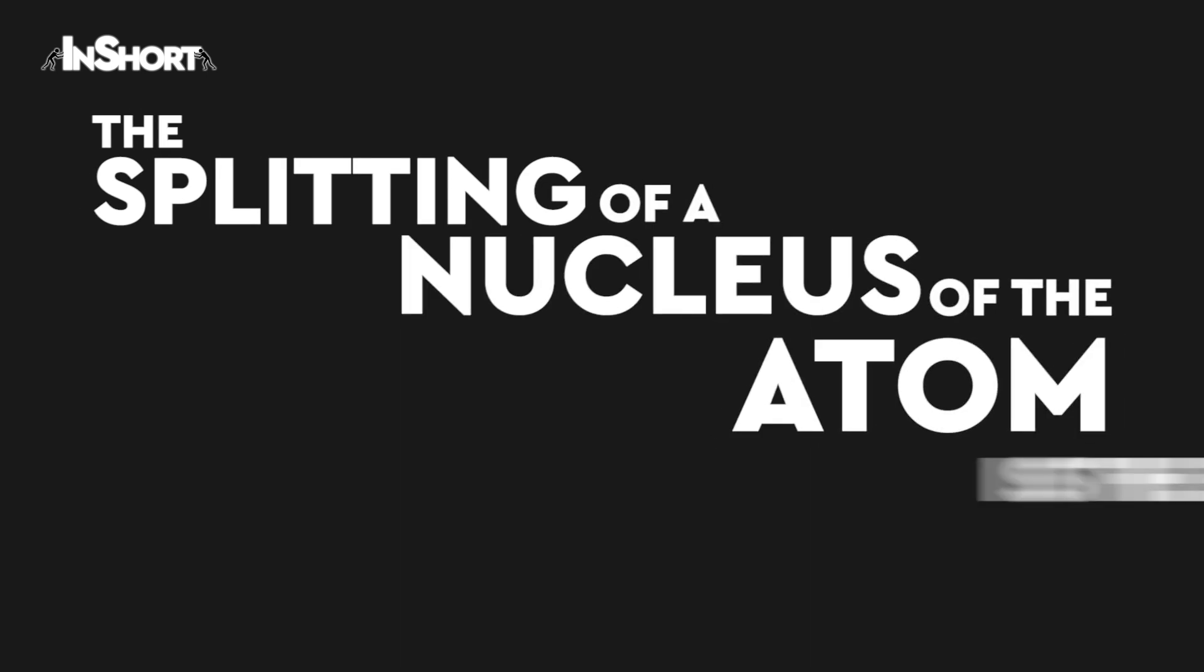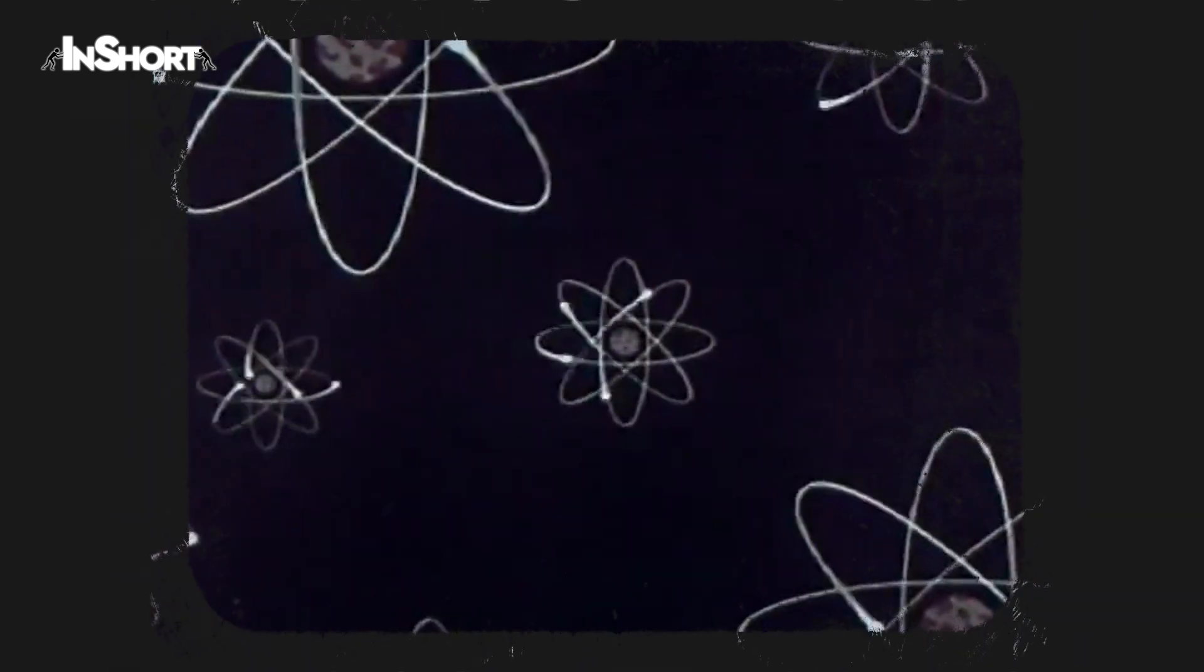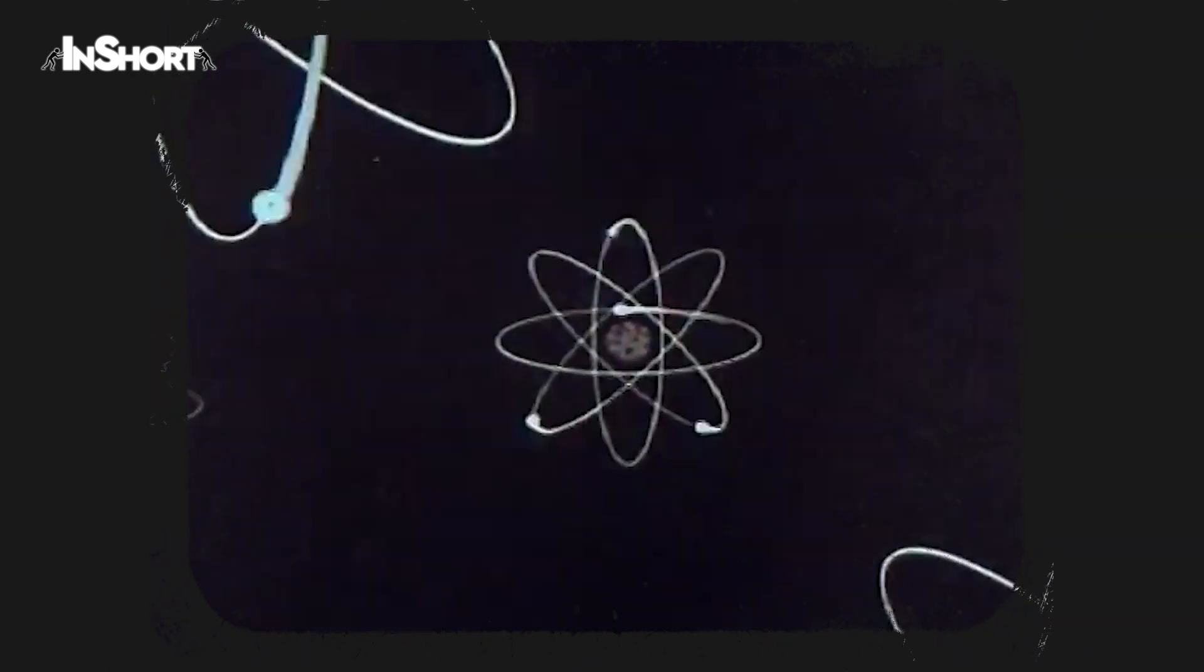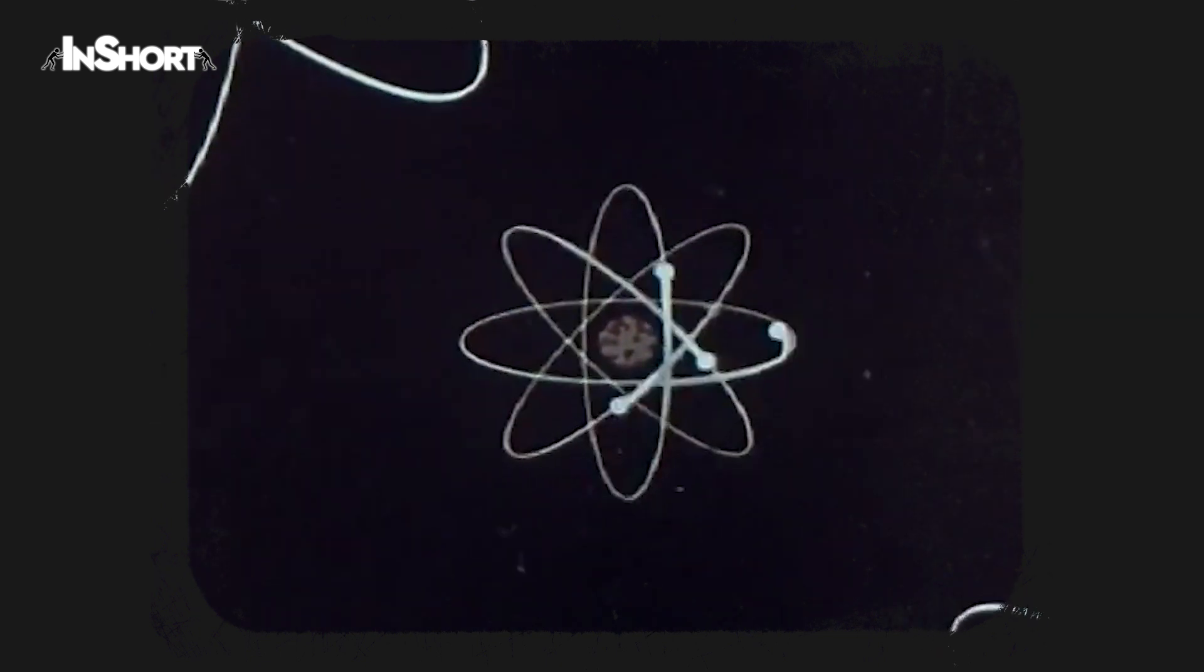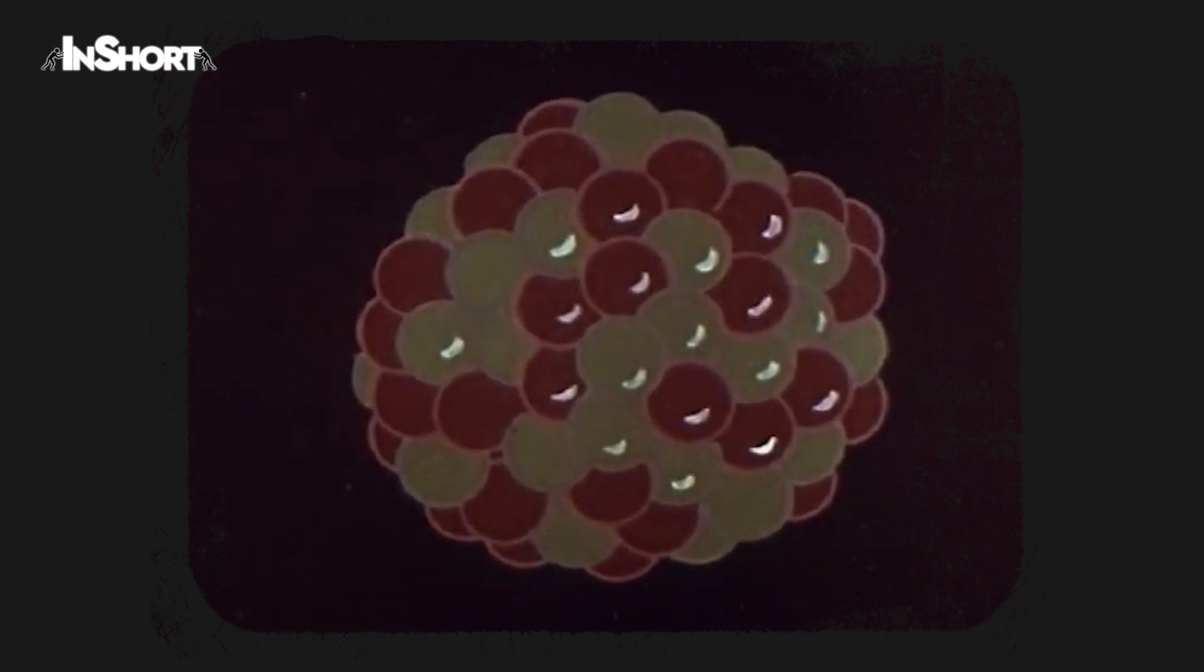The splitting of the nucleus of the atom is the basic principle of nuclear weapons. The atoms of uranium and plutonium are among the heaviest, because the nucleus of each atom contains large numbers of the fundamental particles called protons and neutrons.